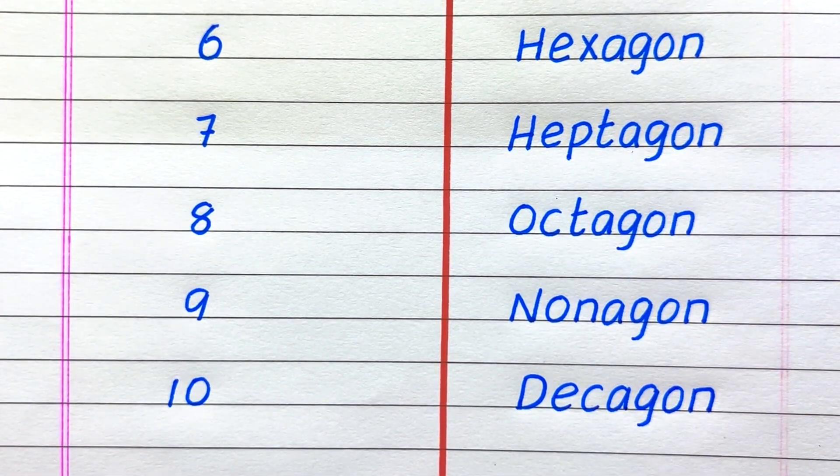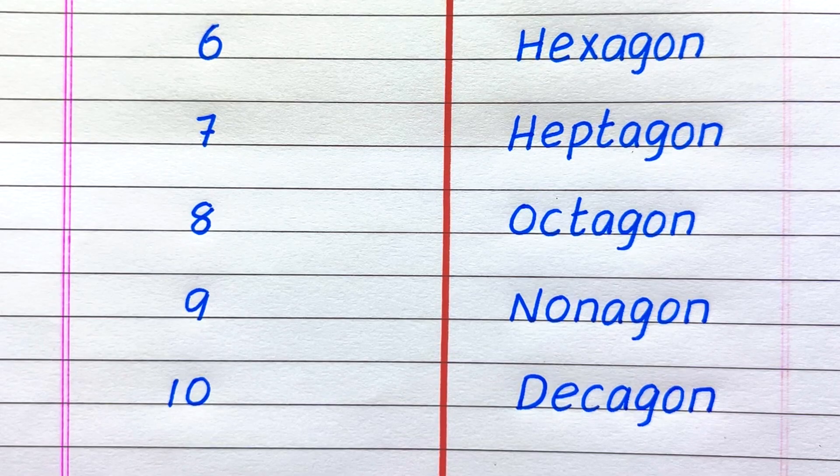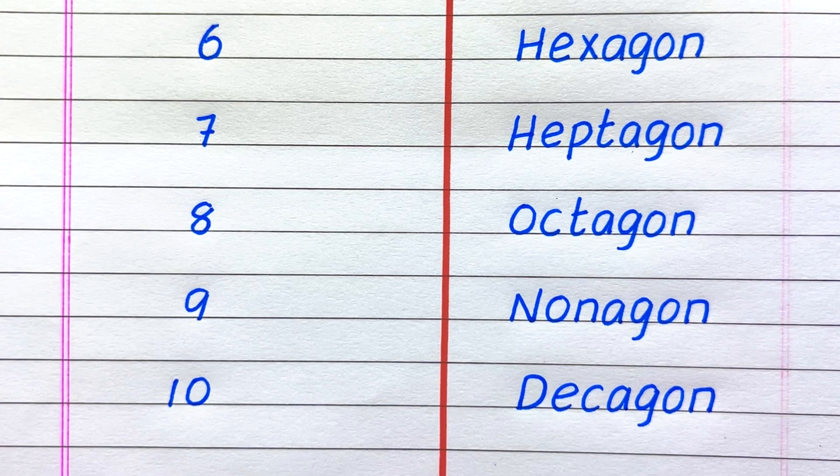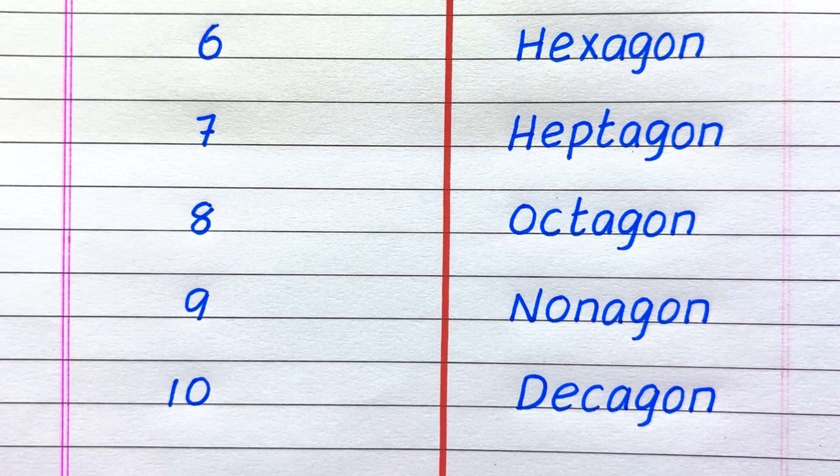A polygon with six sides is called hexagon, seven sides heptagon, eight sides octagon, nine sides nonagon, ten sides decagon.